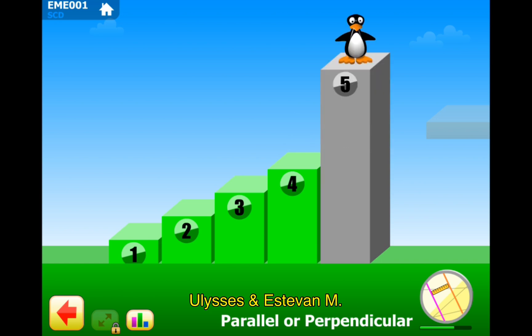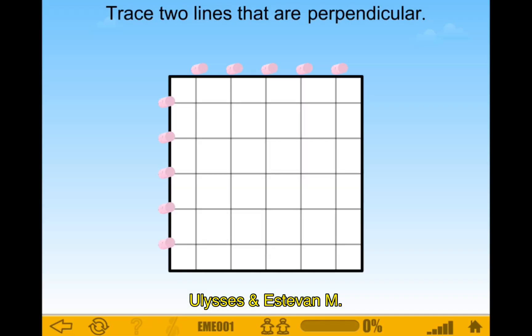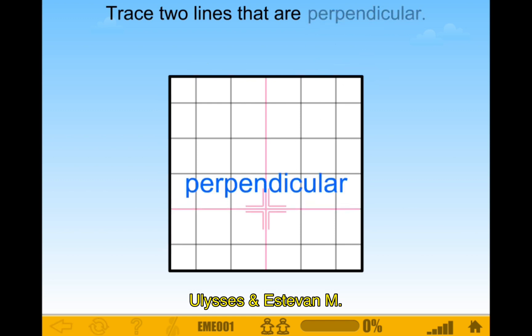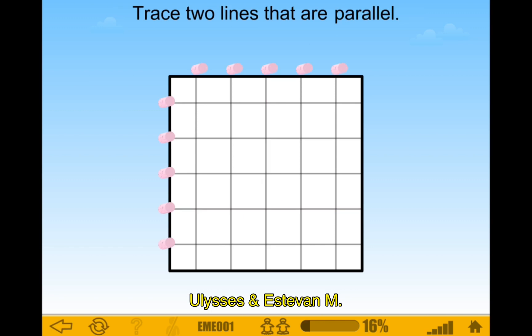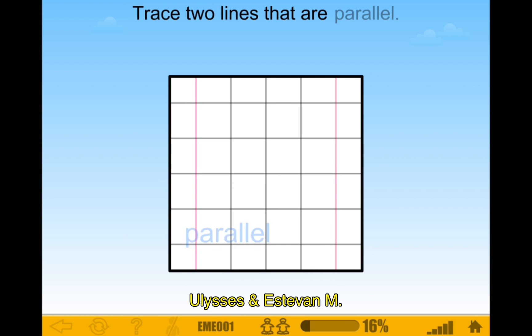Level five and then there's gonna be level six. Trace two lines that are perpendicular. This kind of seems cool. There we go. Those are perpendicular. A lot of those are parallel and perpendicular. Let's make a big parallel one. Big parallel. Big ruler. A long ruler.